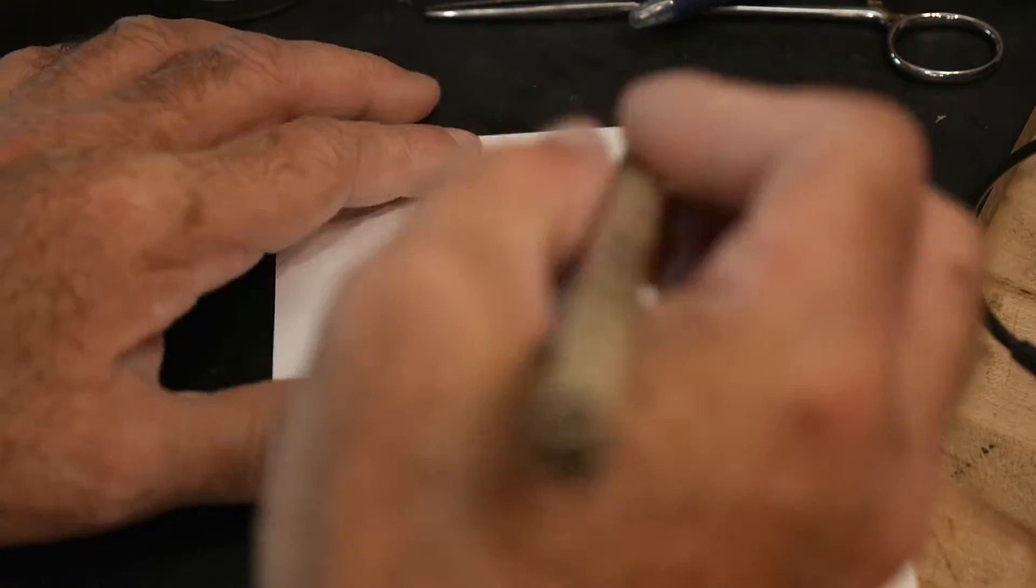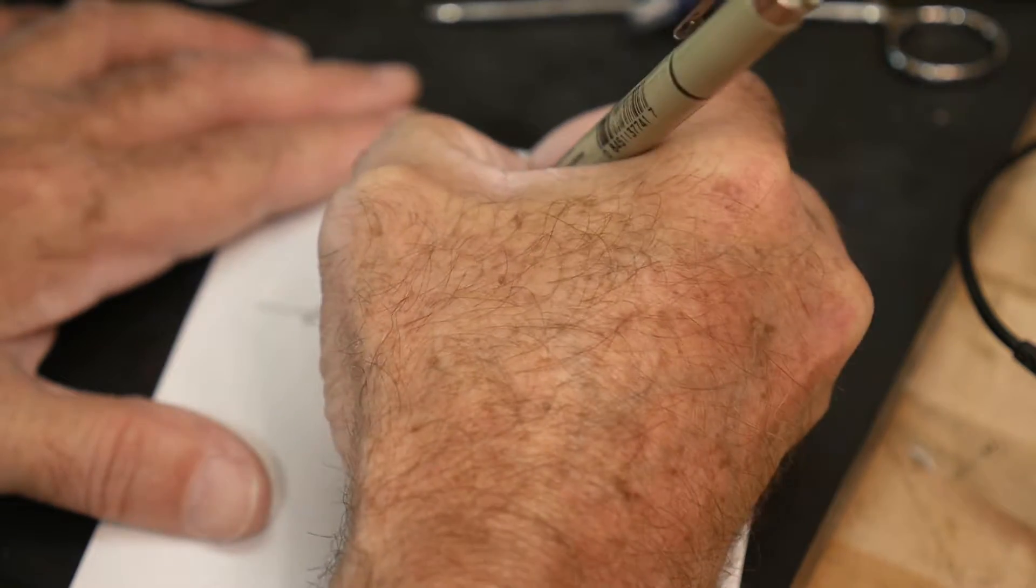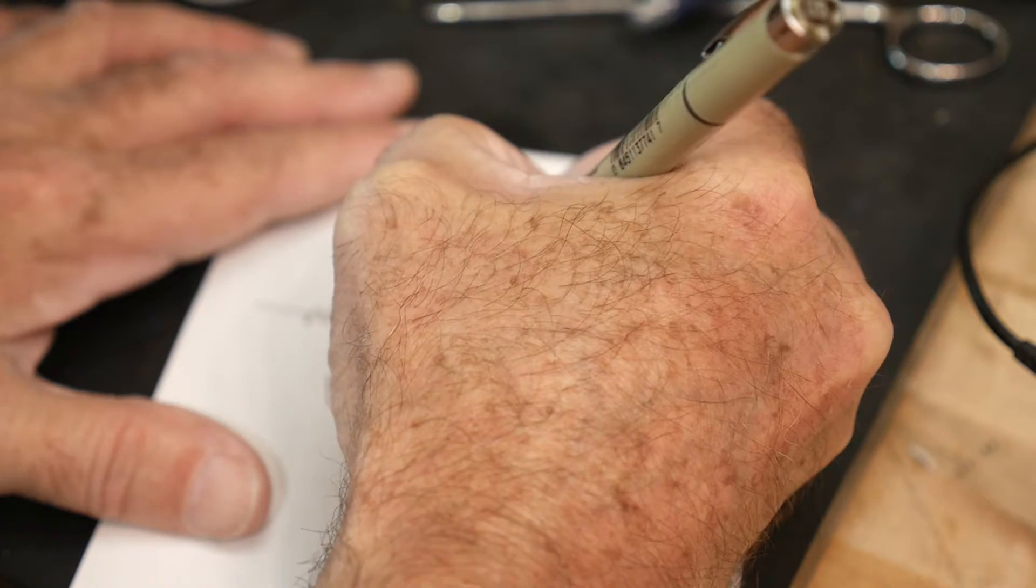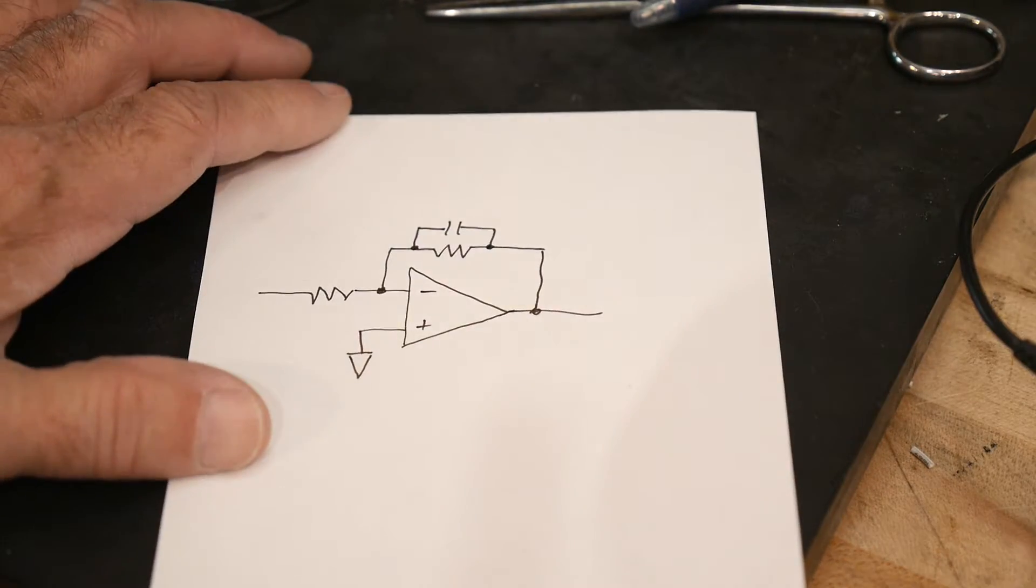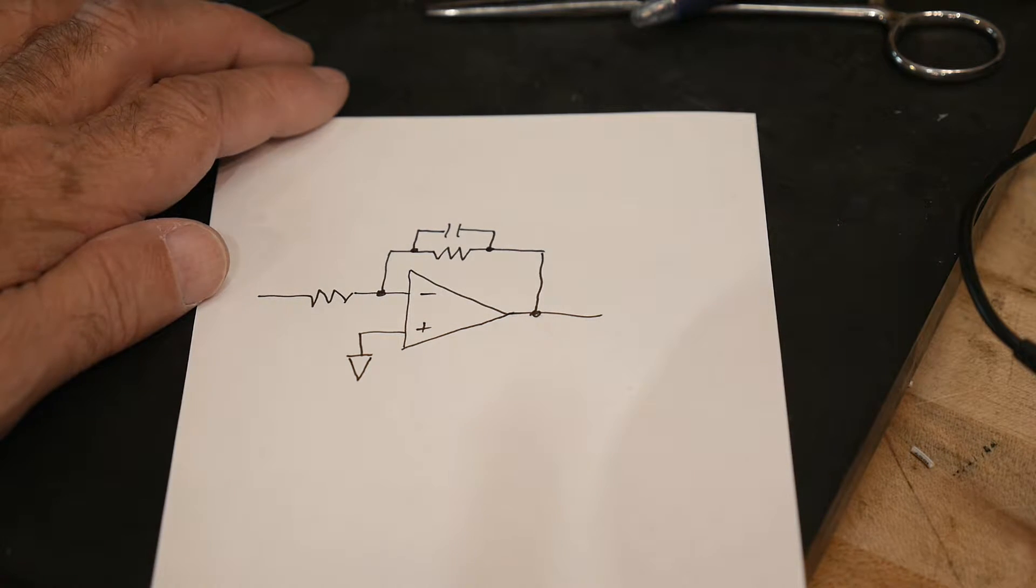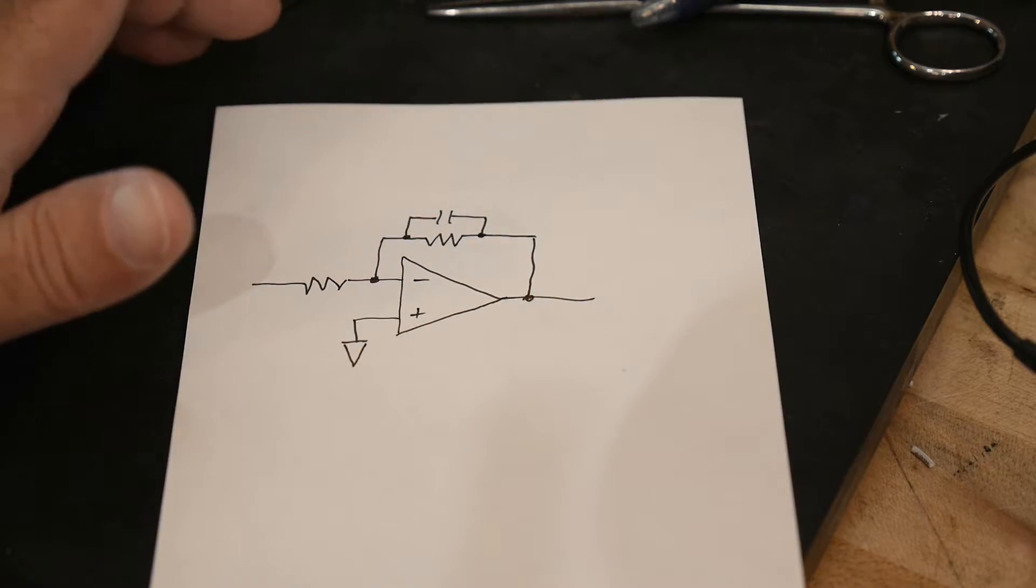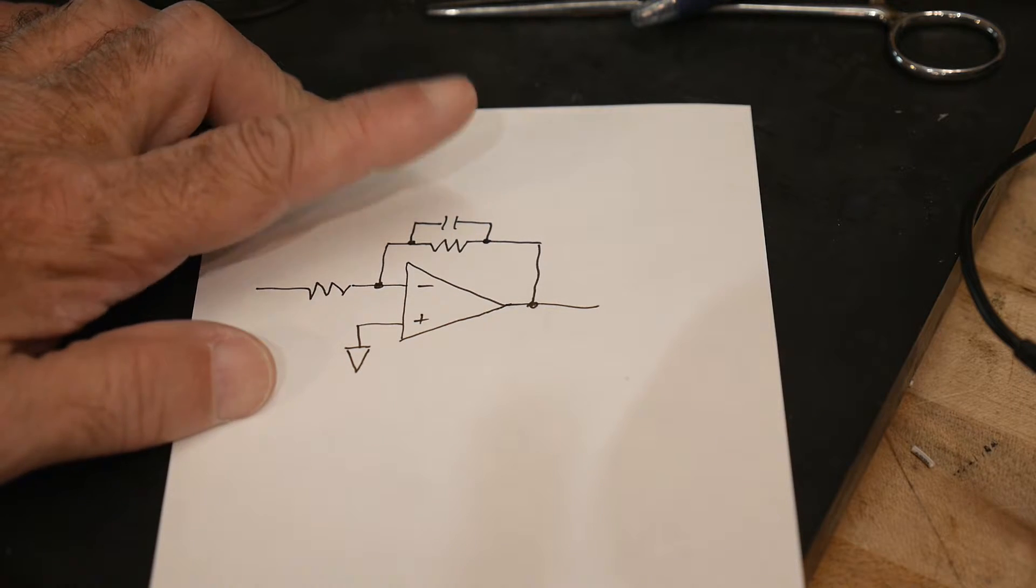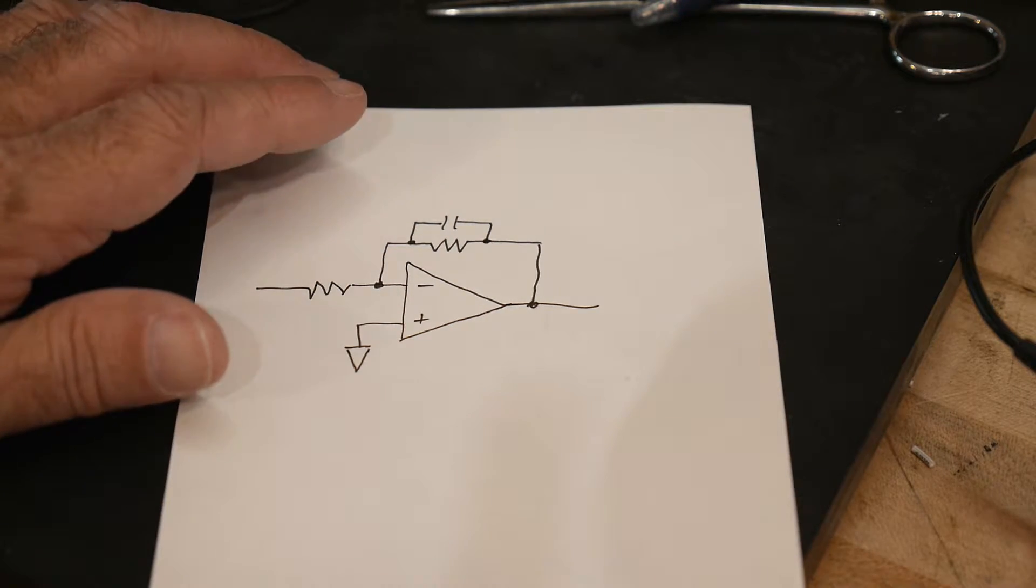You may have also seen people put a capacitor here. That capacitor slows the circuit down. If you have oscillation problems or ringing or something like that in your circuit, sometimes you need to slow it down. You'll put a little capacitor here, maybe 47 picofarads or 100 picofarads, to slow things down and make sure it stays complete.